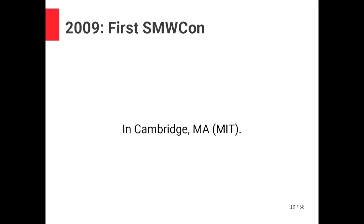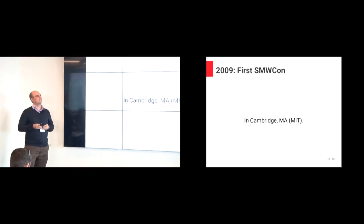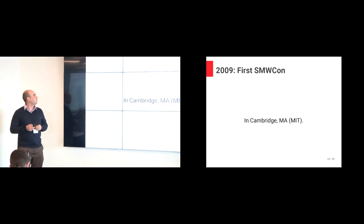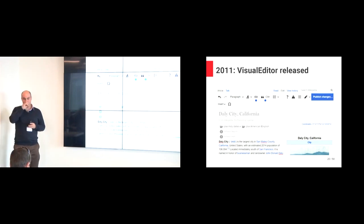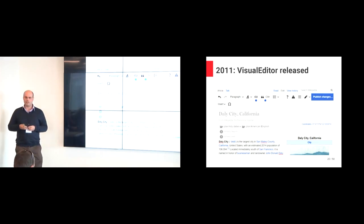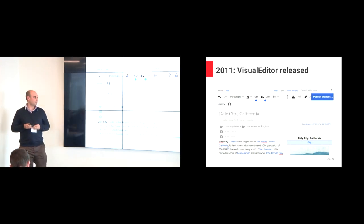On with the history. In 2009 we had the first ever SMWCon — we had some meetings before that, but this was the first under that name. Marcus came up with the name. It was in Cambridge, Massachusetts at MIT. For a while we had two every year; now there's one every year. In 2011, the Visual Editor was released. This is not part of the Enterprise MediaWiki ecosystem — it's created by the Wikimedia Foundation and used on Wikipedia. But it's an important extension for a lot of enterprise users and becoming more important. It was buggy early on, but at this point I think it works quite well.